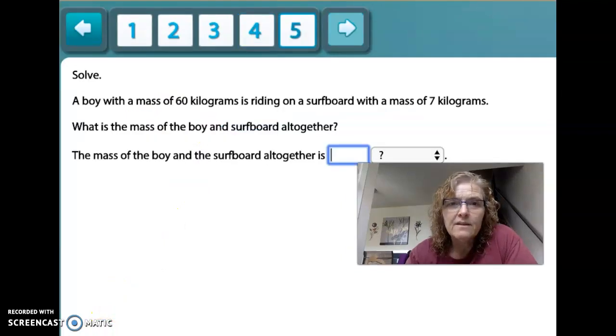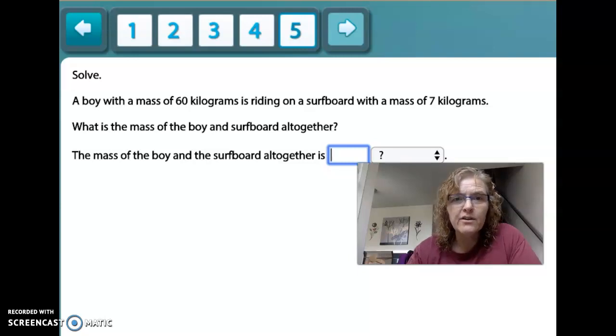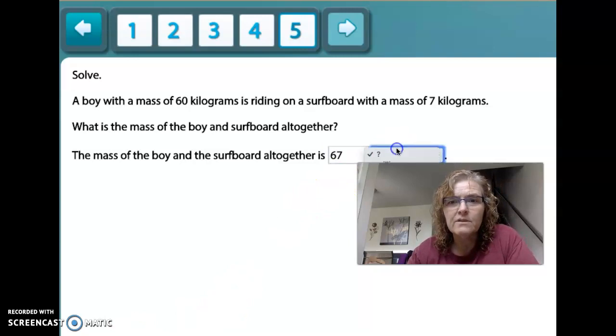Okay, the last one, solve. A boy with a mass of 60 kilograms is riding on a surfboard with a mass of 7 kilograms. Remember, mass is how much it weighs. What is the mass or the weight of a boy and a surfboard together? The mass of the boy and the surfboard all together is 67 kilograms. Just like that. And you're done.